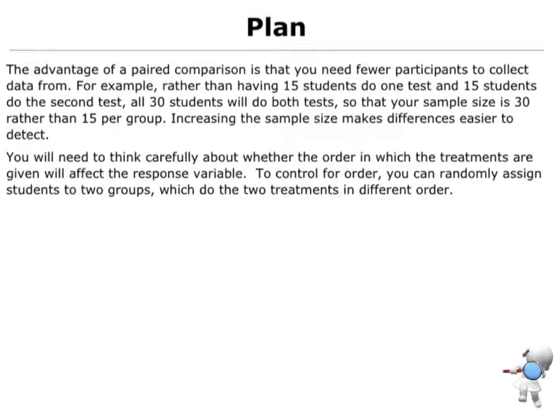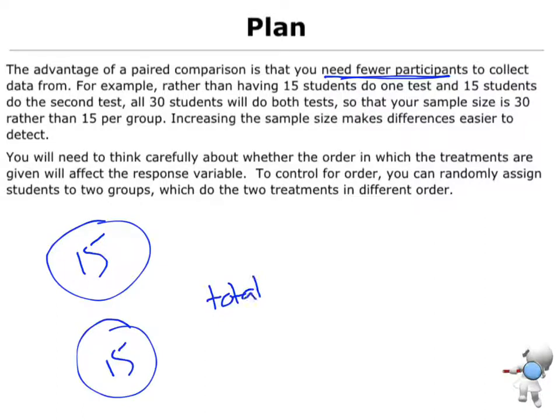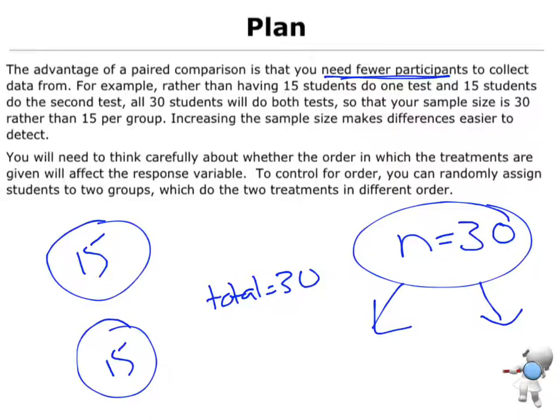One of the key advantages is that I need fewer participants. If I was doing it as two groups, I'd need to have 15 participants in one group, 15 participants in another. So, in total, I would need 30 different participants to get 15 in each group. However, with paired data, because I'm doing two tests on that one group of people, if I've got a sample size of